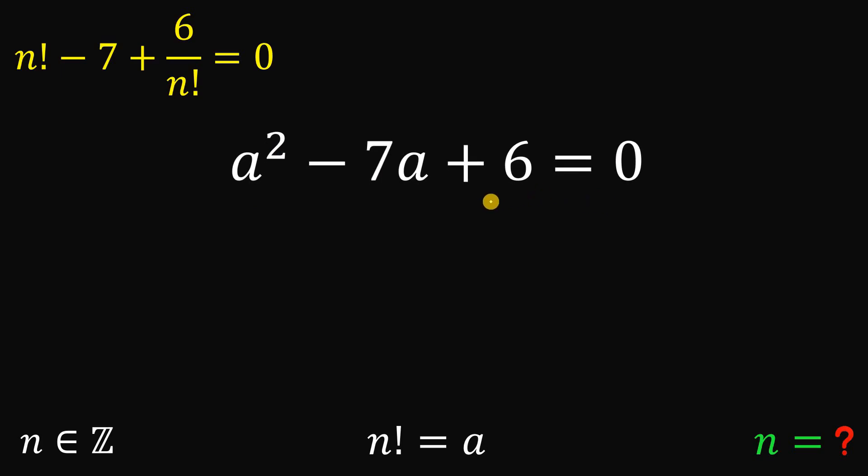We can factor this out easily because negative 7 is simply equivalent to negative 1 plus negative 6, and negative 1 times negative 6 is positive 6. So we can factor this out nicely as a minus 1 multiplied by a minus 6.